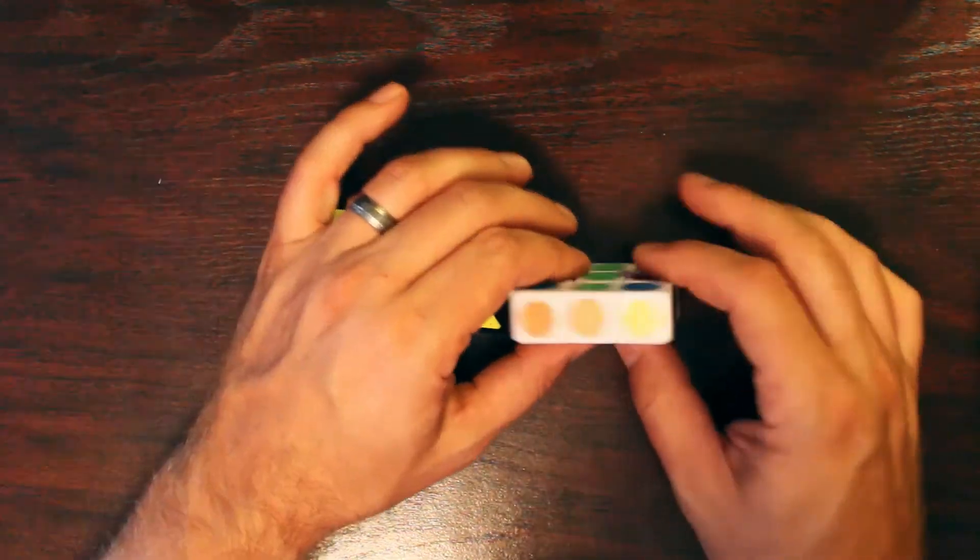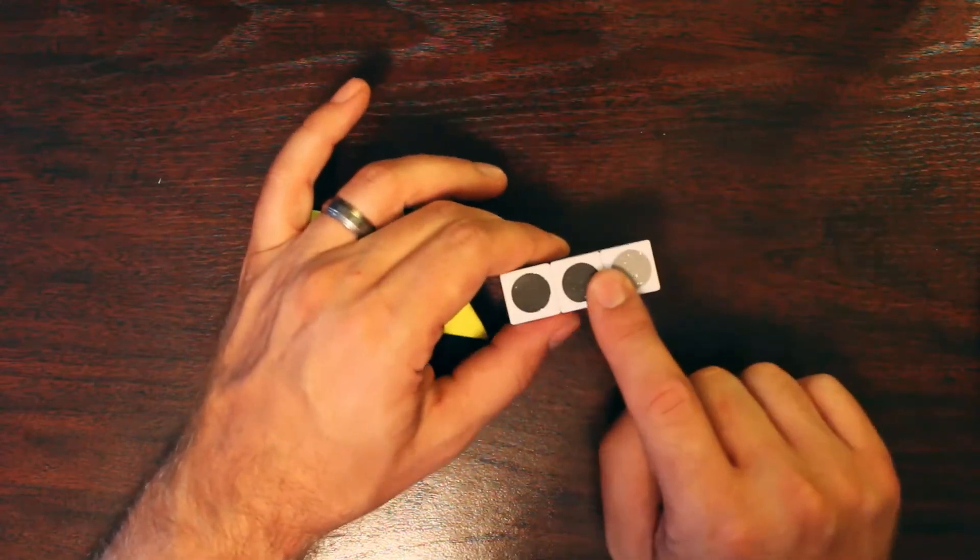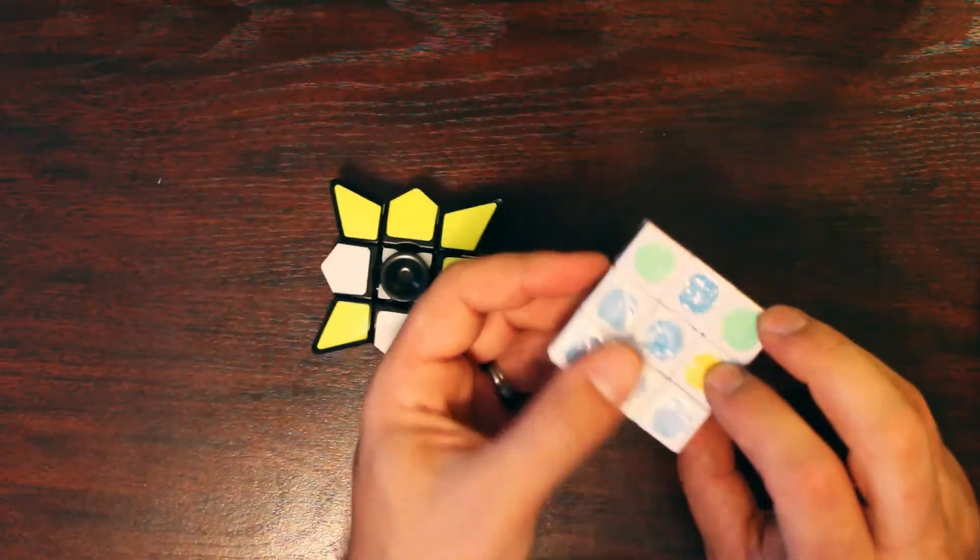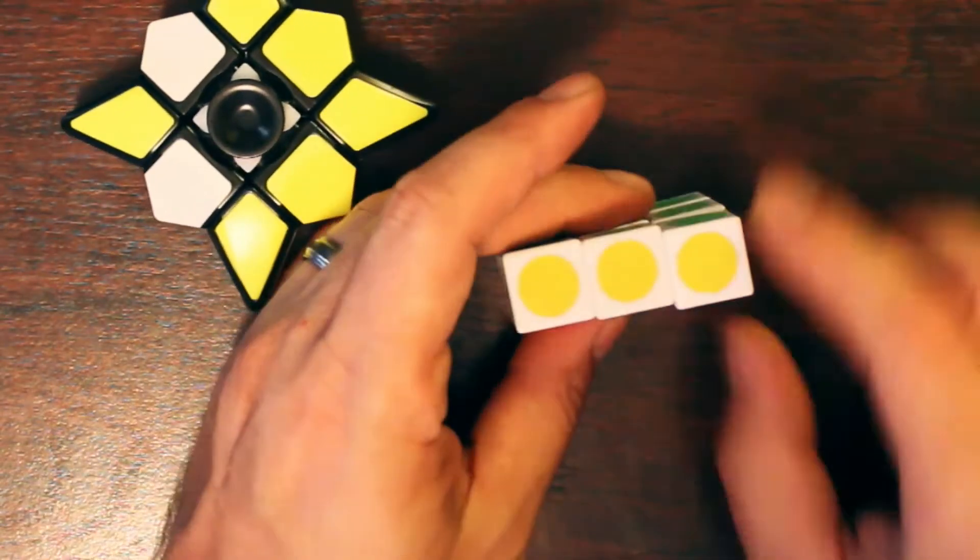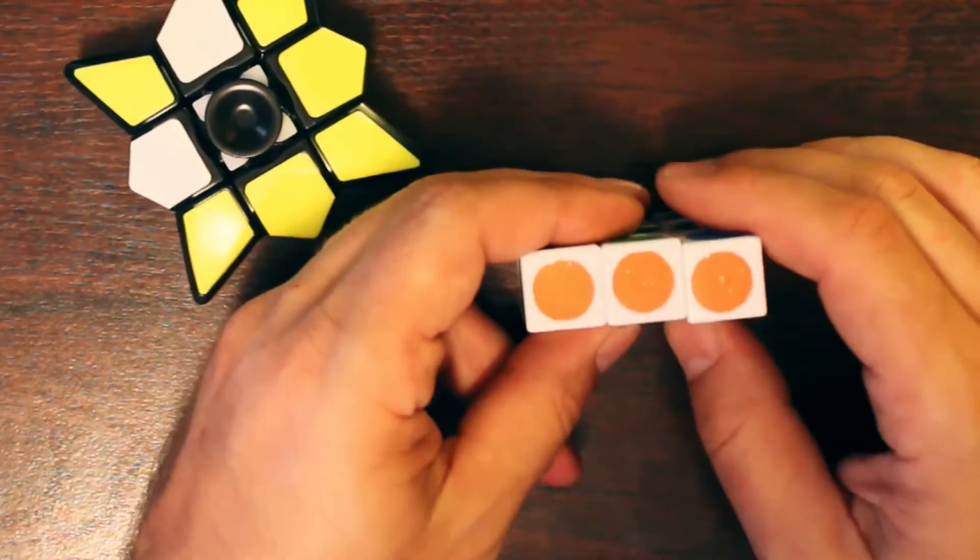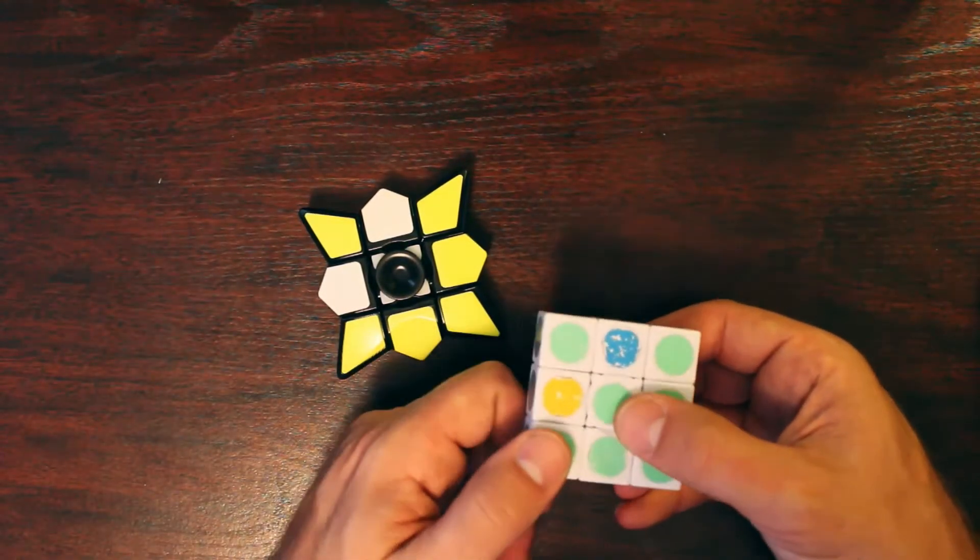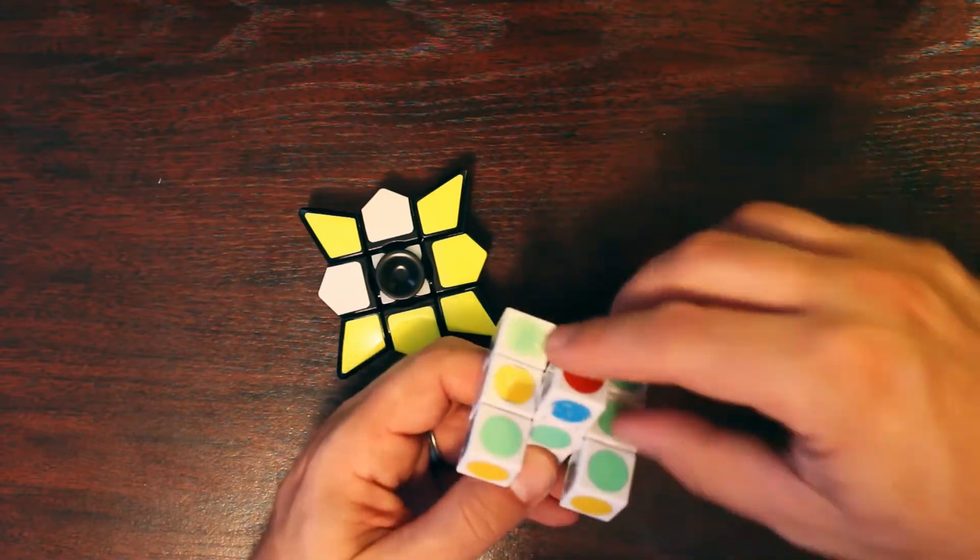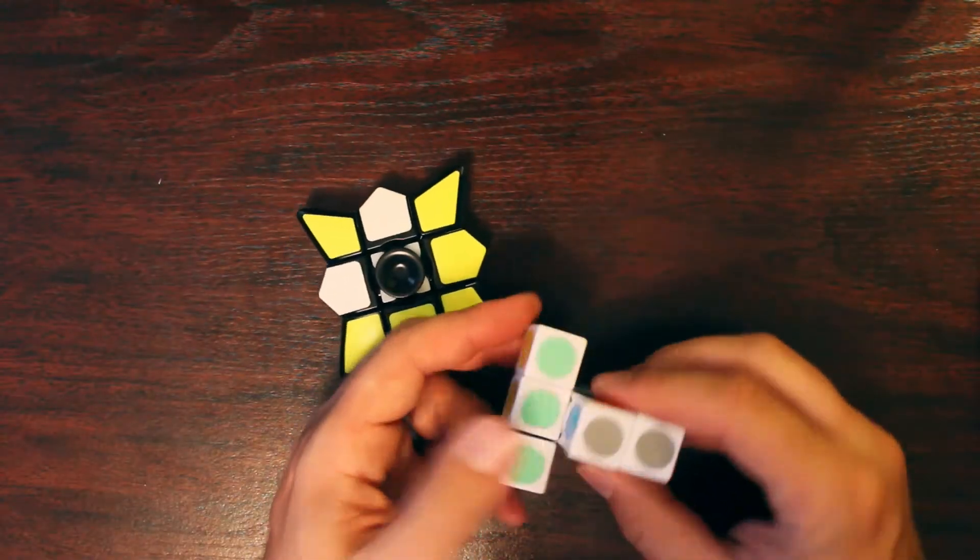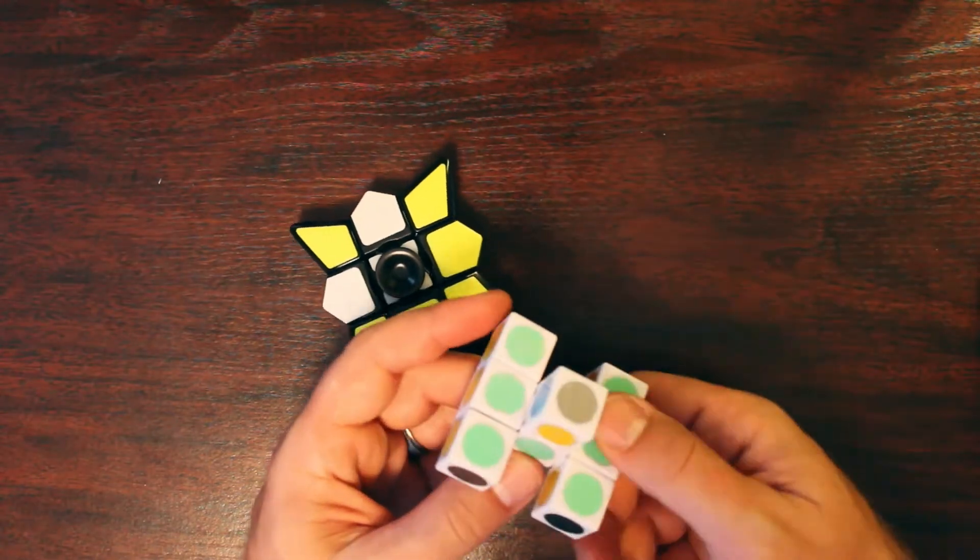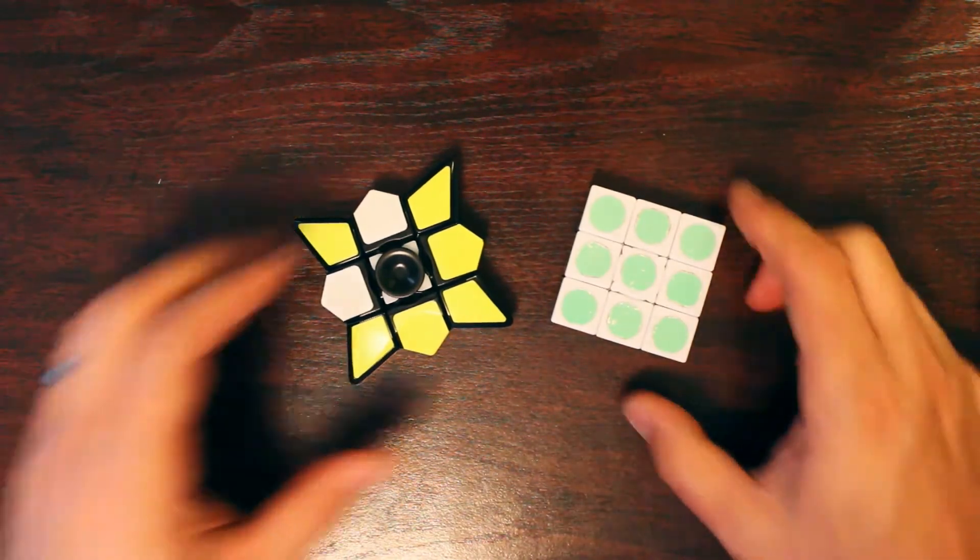To solve, line up the edges first. Always start with the edges. So we've got two darks there. The other dark is here. So I'm going to flip that over and line that up. Yellows and reds are also lined up. Now the last thing we have to do is turn these middles. And those middles turn independently. So I can just put them into place, very nicely, very easy. Once you figure that trick out, this is one of the easiest puzzles to solve.